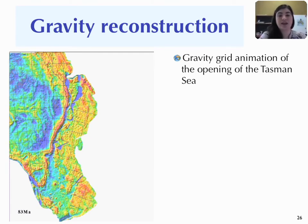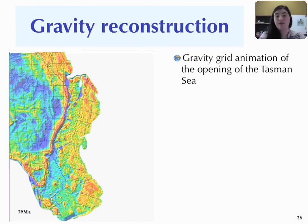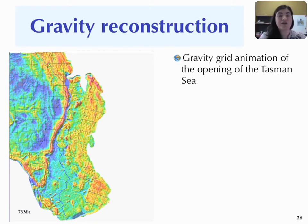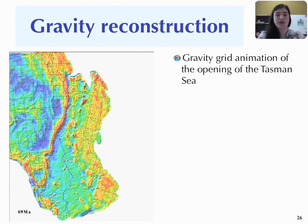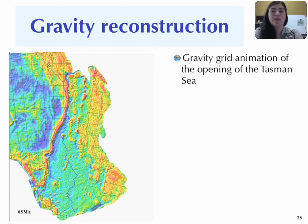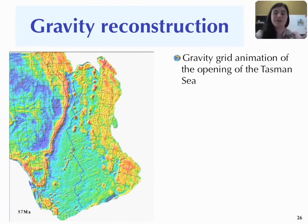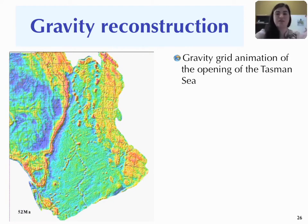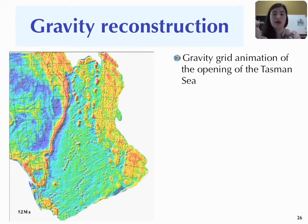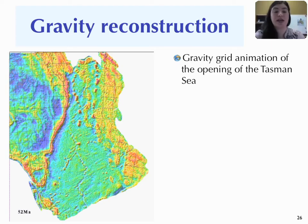Here is just an animation of the Tasman Sea reconstruction — a gravity grid animation done by Carmen Gaynor — basically showing how we've used the magnetic anomaly data and fracture zone data to create our finite rotations and build our model of how the Tasman Sea opened, showing what the seafloor spreading history was like east of Australia. This is just one example of how we build our global age grid model.